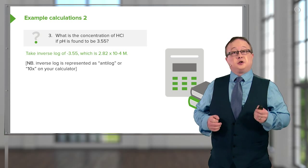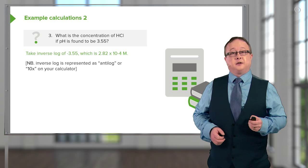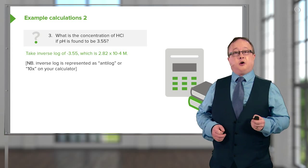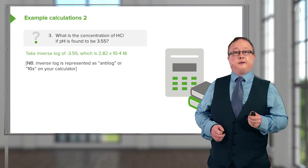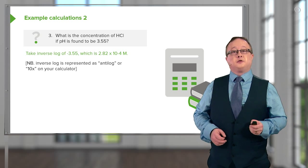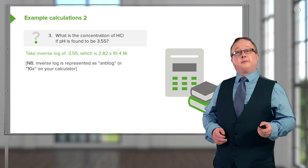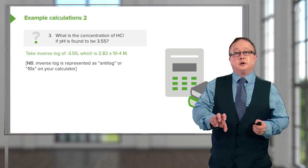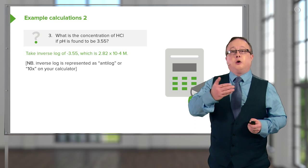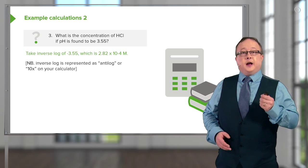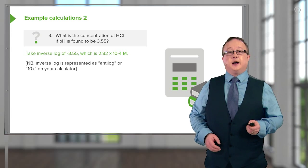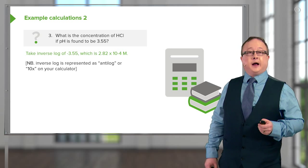How would we work out the concentration of HCl that we actually added? What we then do is we take the inverse log of minus 3.55, reversing the equation and giving us a value of 2.82 times 10 to the minus 4 molar. The other unit for molar is moles per decimeter cubed or moles per liter. The inverse log is represented as the anti-log or sometimes as 10 to the x on your calculator.